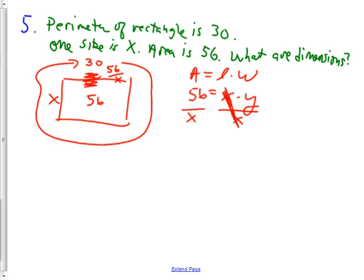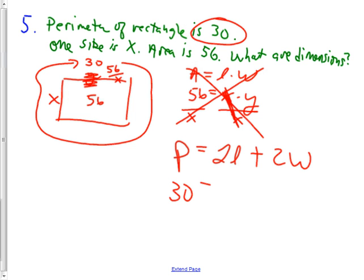Now that I know I've got my picture labeled really nicely, now I can use a different formula, and that's the one for the perimeter. Perimeter is equal to 2 lengths plus 2 widths. And I know a bunch of that info. Perimeter is 30. 30 equals 2 lengths, which I'm going to say is 2x, plus 2 widths, which I'm going to say is 2 times 56 over x.